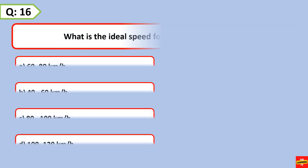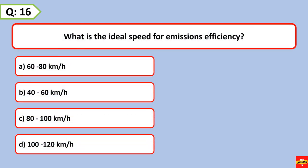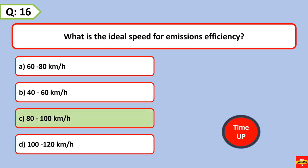What is the ideal speed for emissions efficiency? 80 to 100 kilometers per hour.